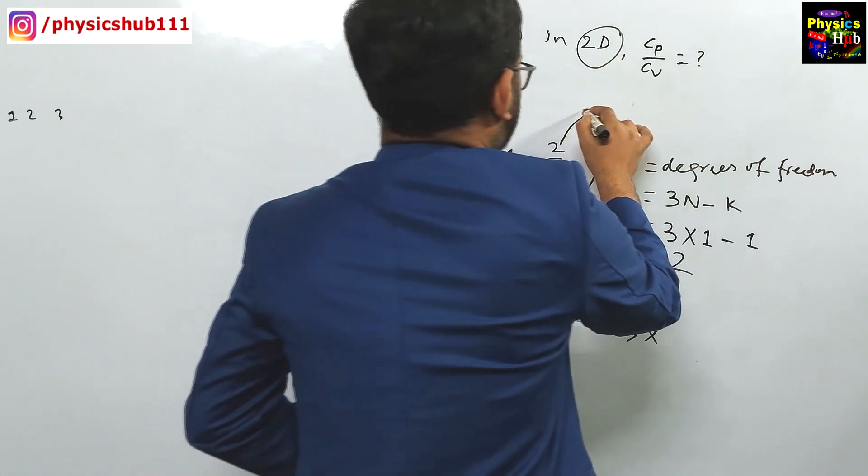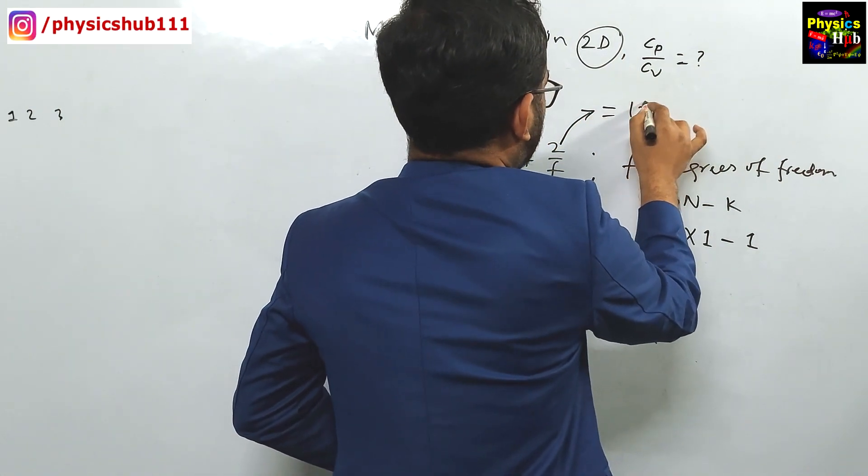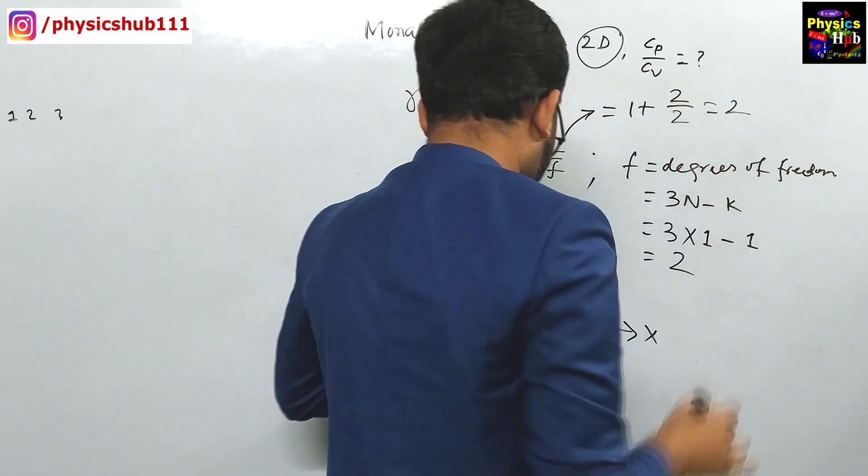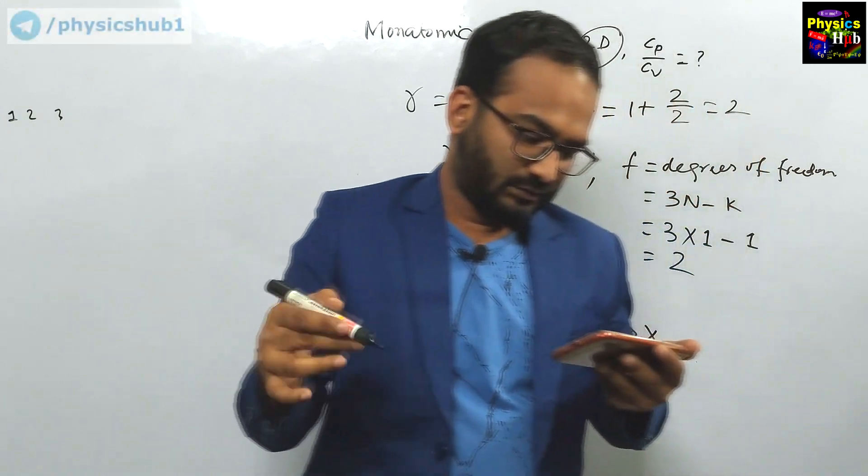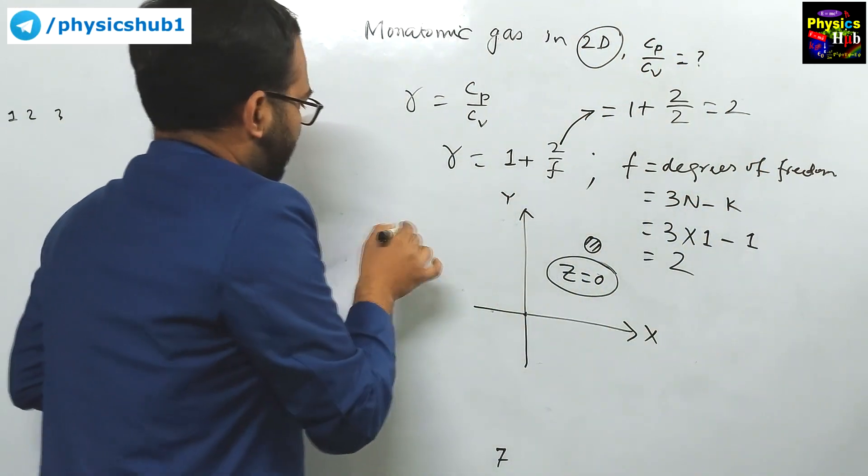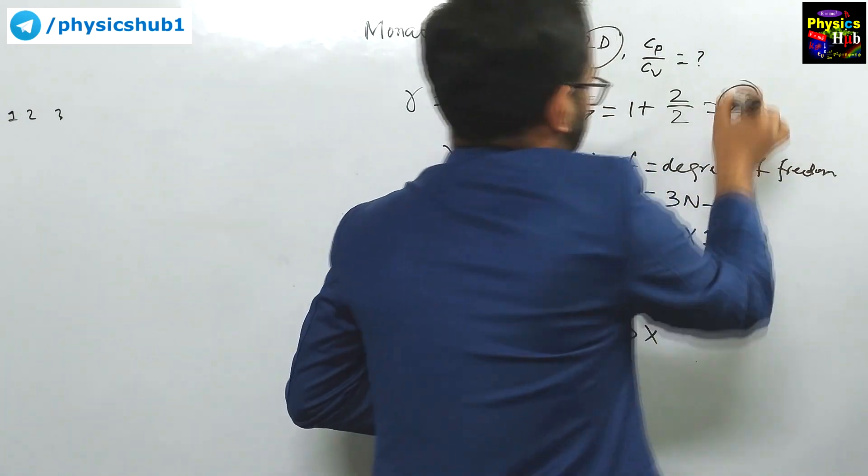If you put in this formula your gamma value becomes 1 plus 2 by F is 2. So 2, and as I can see he has written the option 5 by 3, 2, something something. So 2 is there in the option. I think 2 is the correct option for this particular question.